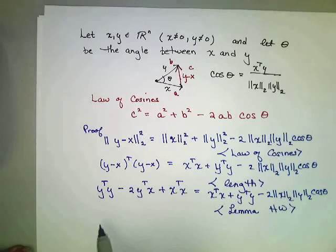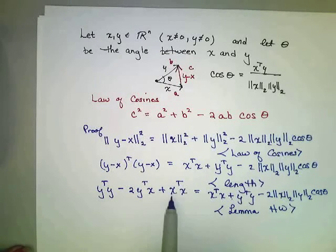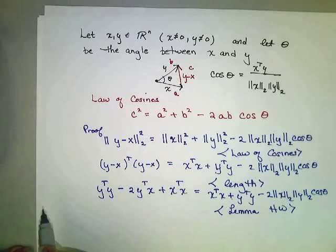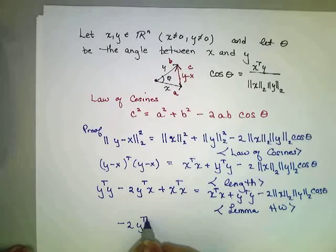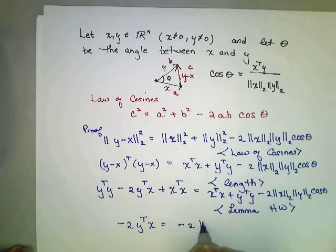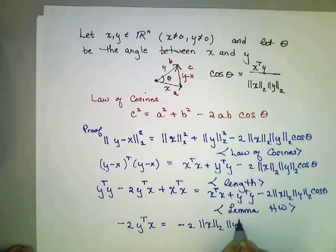Now, by algebra, I can actually simplify this equation. I can subtract y transpose y and x transpose x from each side, which yields minus 2 times y transpose x is equal to minus 2 times the length of x times the length of y times the cosine of theta. That's just algebra.